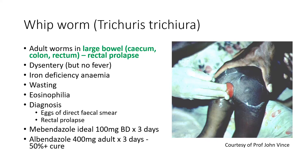Adult whipworms live in the cecum, colon, or rectum, causing rectal prolapse, bloody diarrhea, sometimes dysentery, and iron deficiency anemia. If you see a child with dysentery, rectal prolapse, and eosinophilia, that's the clinical diagnosis of Trichuris trichiura. Albendazole alone won't treat whipworm very well — about half of patients relapse. You really need mebendazole for three days. I would treat with both mebendazole and albendazole to cover all worms. Rectal prolapse won't resolve until the whipworm is treated.